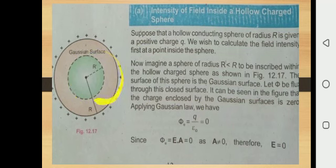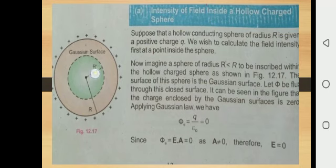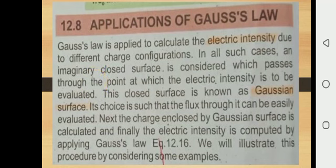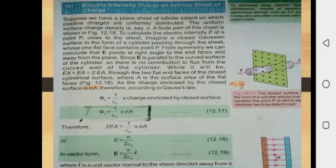In this way, if we place any metal casing inside a hollow charged sphere, it is shielded from the external field. Many electronic circuits are sensitive to electric fields. To stay safe from external electric fields, they are shielded inside such metal enclosures. Now we will discuss the second example for the calculation of electric intensity.